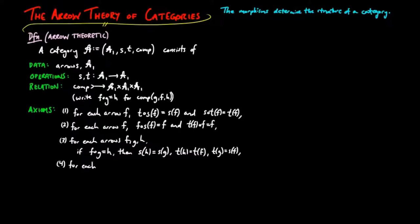For each arrows F, G, if the target of G is equal to the source of F, then there exists a unique arrow h such that FG is equal to h.